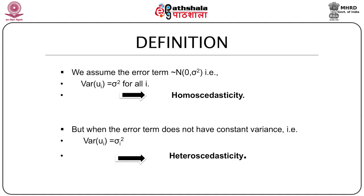What do we mean by heteroscedasticity? One of the many assumptions of the linear regression model is that the error variances have to be constant. In a linear regression model, we assume the error term has a normal distribution with mean zero and variance sigma square. That is, in a model where we denote the error term by u_i, we assume that the variance of u_i equals sigma square for all i.